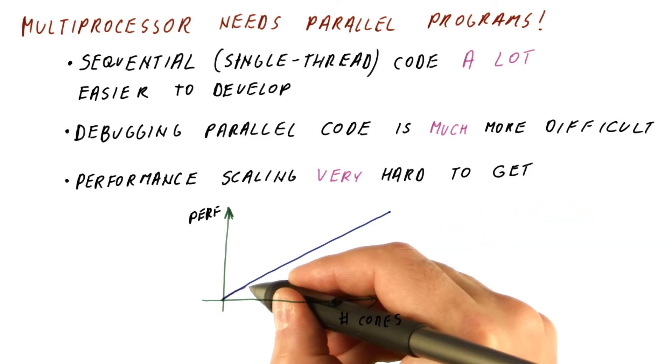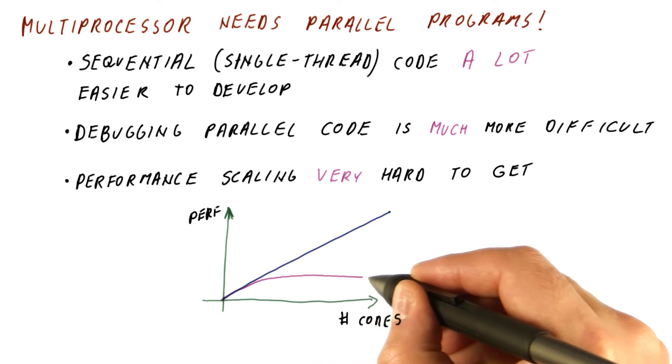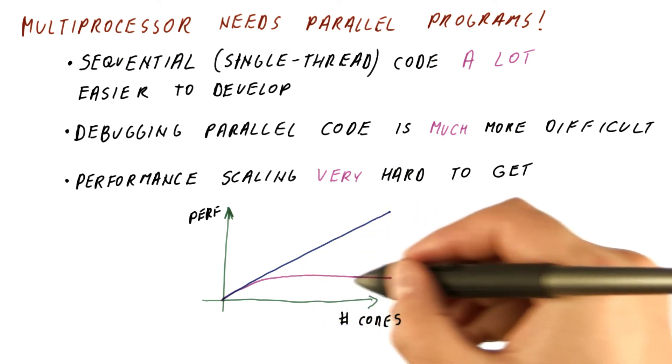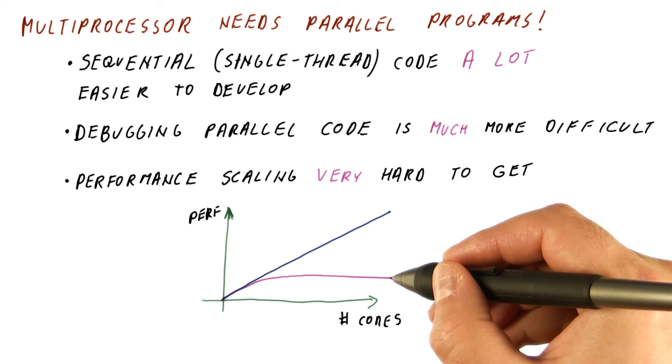Unfortunately, most programs, when you write them, do something like this. They scale for a while and then stop scaling. Eventually, you stop getting more performance from the number of cores.